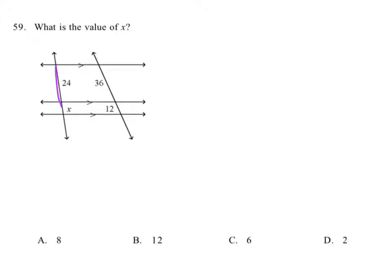Well, we can set up a proportion then: 24 is to x as 36 is to 12. So we can say 24 over x equals 36 over 12. Multiplying the diagonals, we get... I'm sorry, that's not what we get. We get 12 times 24 equals 36 times x.